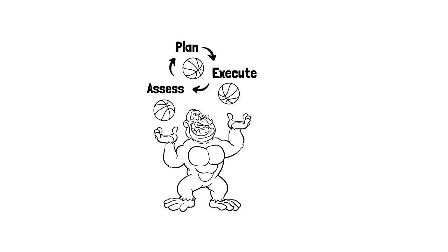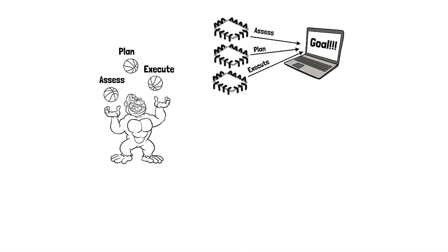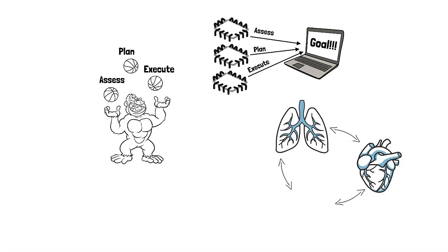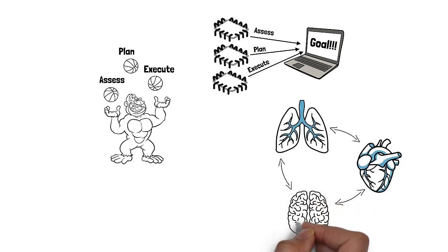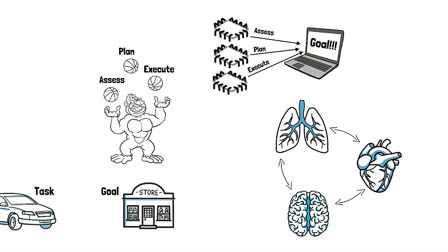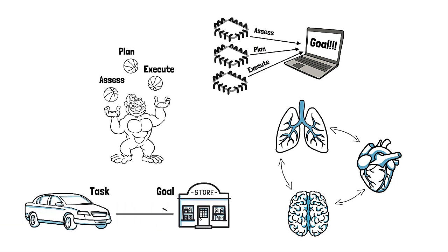It is also important to keep in mind that APE is not a cyclical or circular model that repeats — where you first assess, then plan, then execute. Instead, the components work together, similar to how a computer has multiple processors working in parallel, or how your lungs, heart, and brain function as a system. This means each component influences the other components simultaneously. While driving a car, for instance, you are assessing while planning while executing, juggling multiple decisions in order to reach your destination.